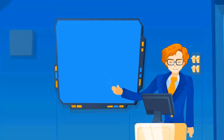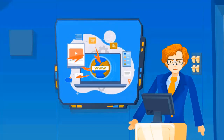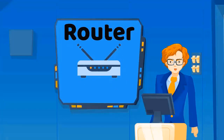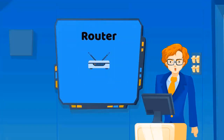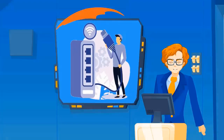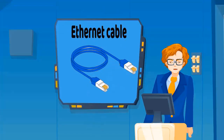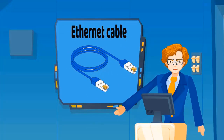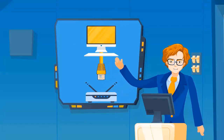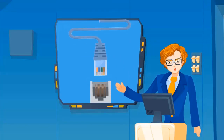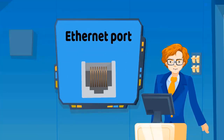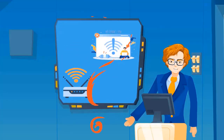During my work I may need to access the internet. First, make sure that the router is working. The router is a device that connects the computer to the internet via Wi-Fi or Ethernet cable. The Ethernet cable connects the computer to the router and is inserted into a dedicated port on the computer called the Ethernet port. The Ethernet cable connection is more stable and faster than wireless connections.